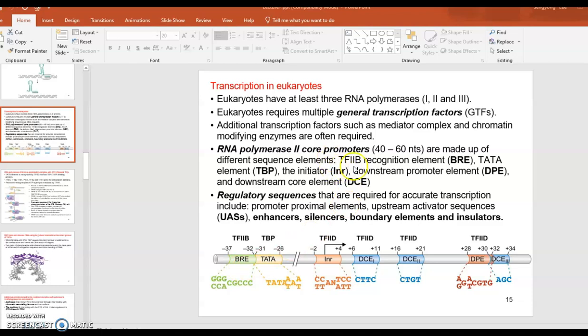It's made out of transcription factor B recognition elements, B recognition element, that's why it's BRE, as part of that, as well as TATA binding protein recognition. It's TATA because it's a T-A-T-A rich sequence. That's where TATA binding protein binds. That's a transcription factor. And then there's an initiator sequence there, and then there's a downstream promoter element and downstream core element. Why are they considered downstream? Because they are downstream of the start of the transcription site. The transcription is starting right there, so compared to that it's downstream. Then these will be considered as the upstream.